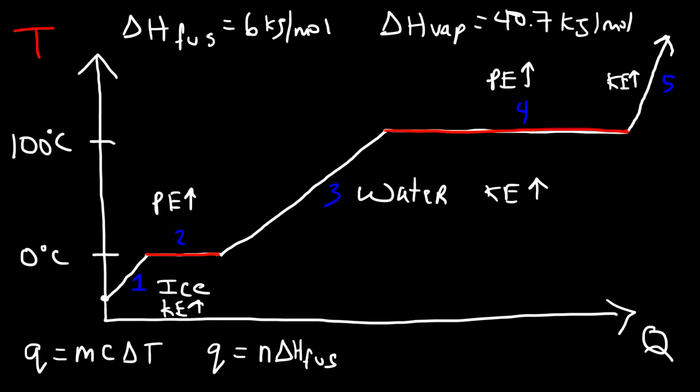When water molecules come together to form a hydrogen bond, energy is released — that occurs during condensation. But when you add energy to break the hydrogen bonds and separate the water molecules, energy is absorbed. So vaporization is an endothermic process, but condensation is an exothermic process.